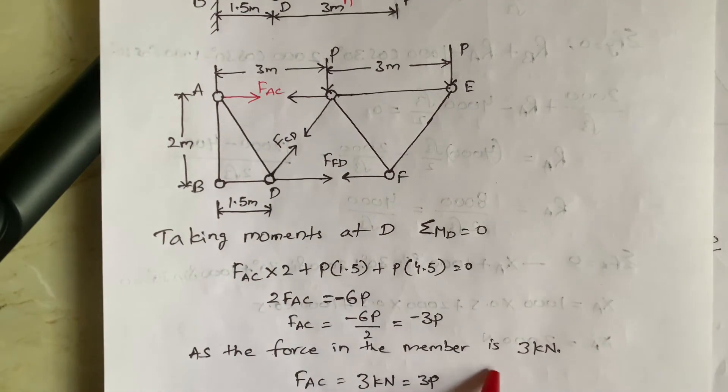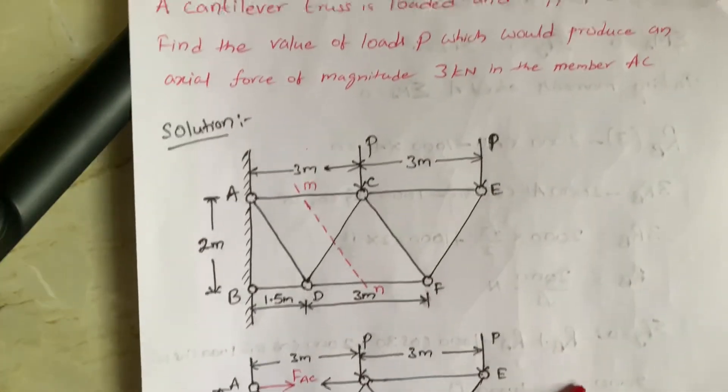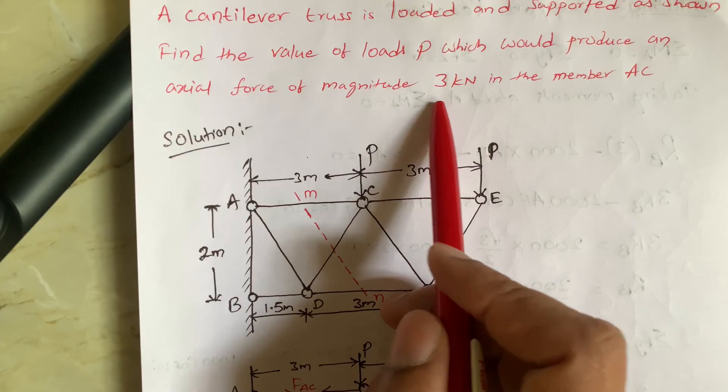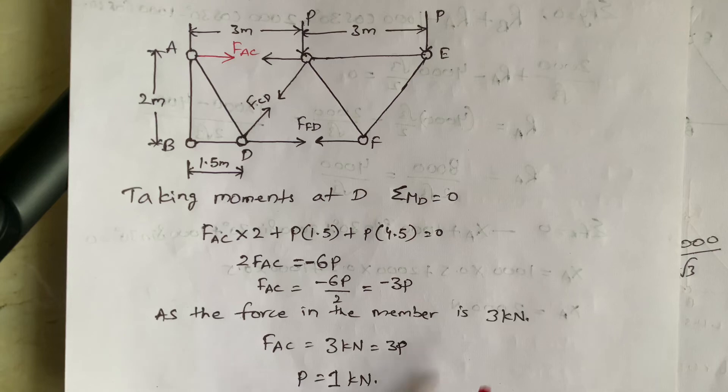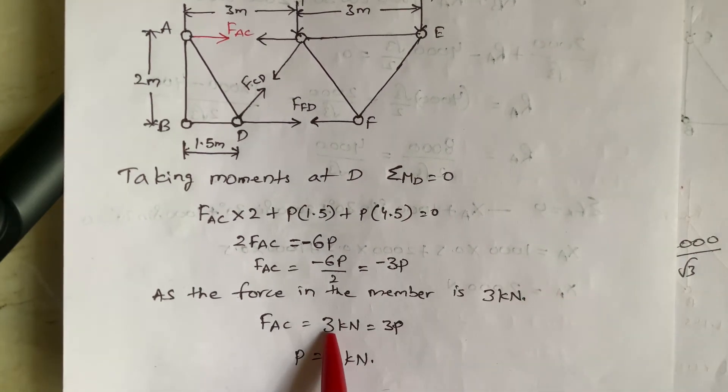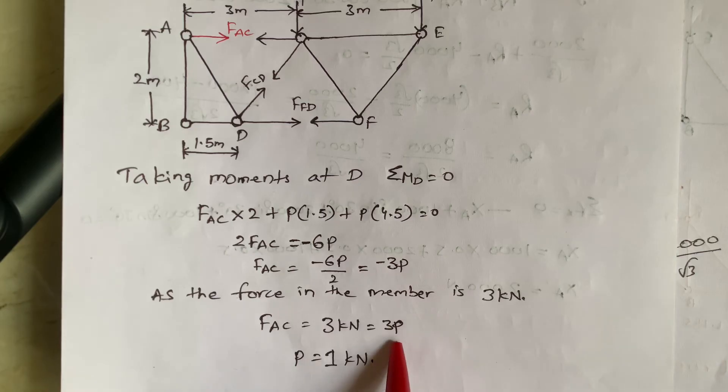And next, as the force in the member is 3kN. We know that in the equation, we mentioned that force of magnitude, which is 3kN in the member AC. So force in the member is 3kN. So FAC equal to 3kN and that equal to 3P.